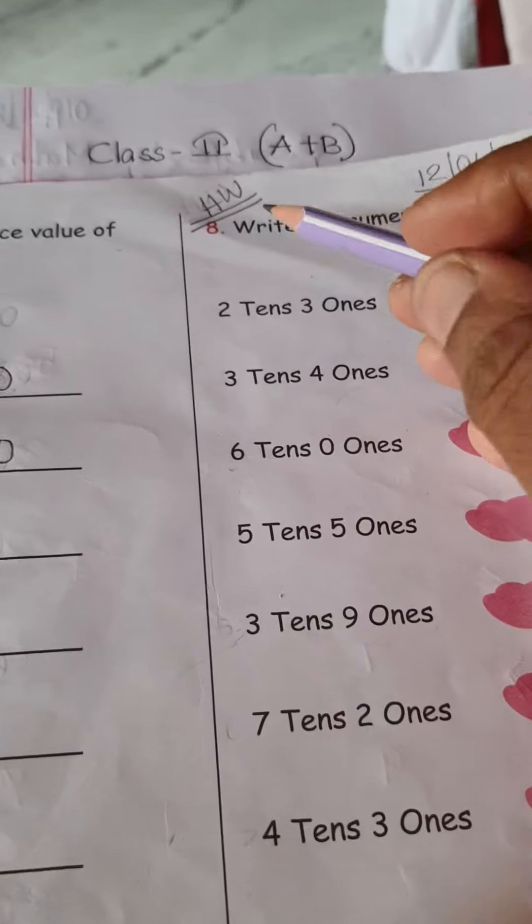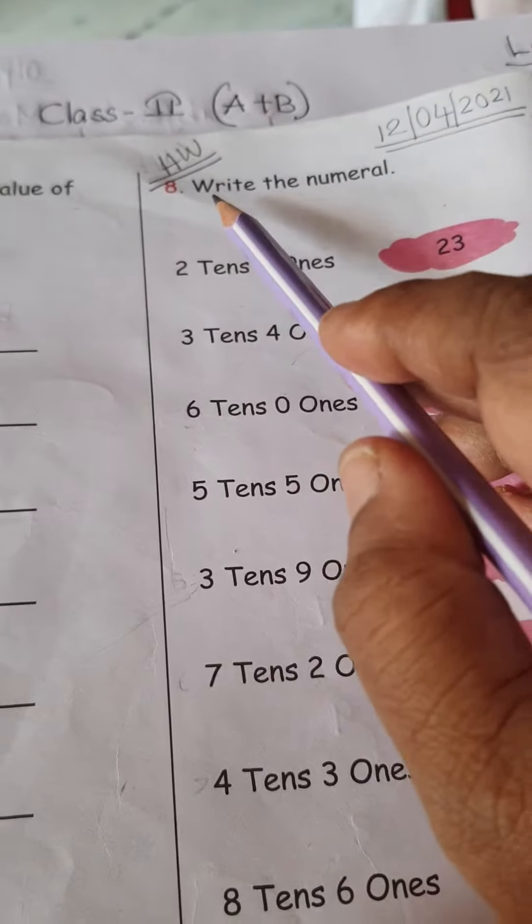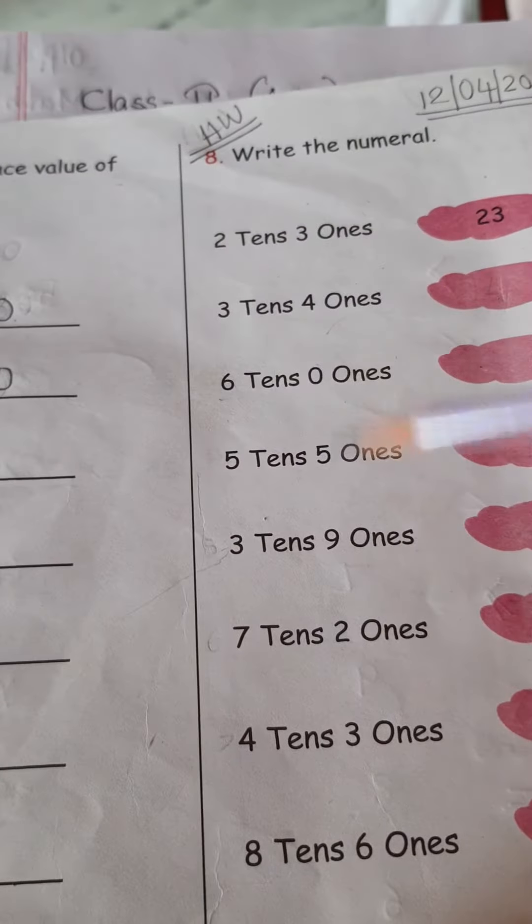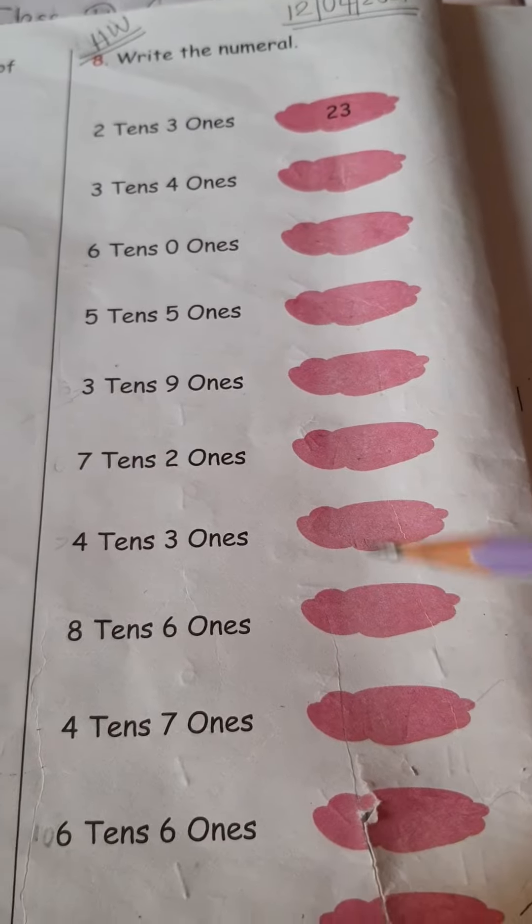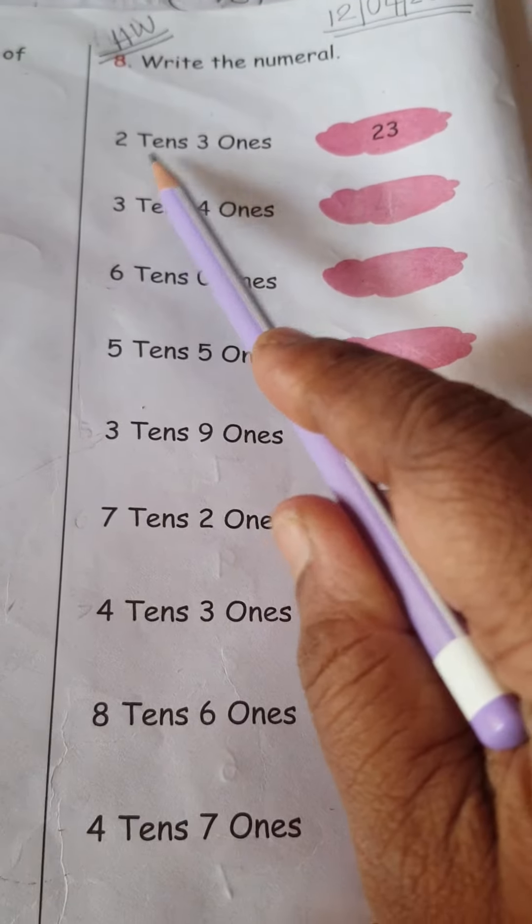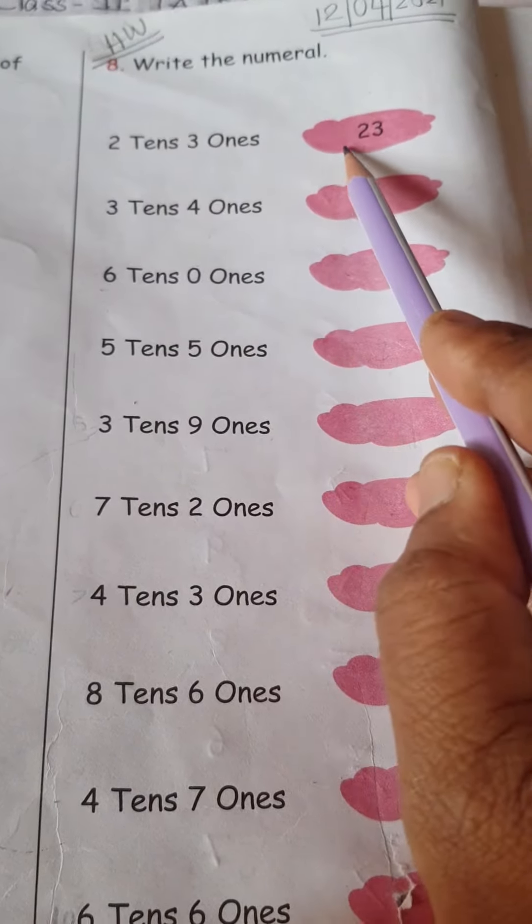And this is for your homework. How, means how you solve this? Write the numeral. Only you have to write the numeral. First, see? 2 tens, 3 ones. So, 23.